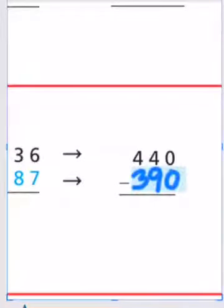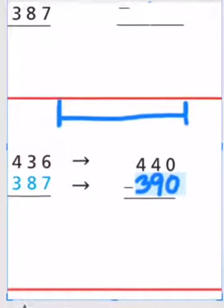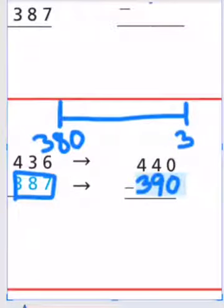And again, if that doesn't make sense for you, draw out your number line, and our number that we're working with is 387, right? So our choice is going to be 380, since we're rounding to the nearest 10, 380 or 390.